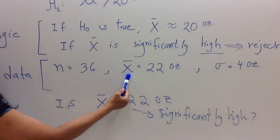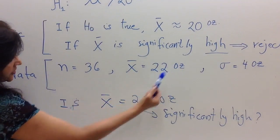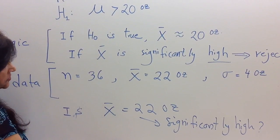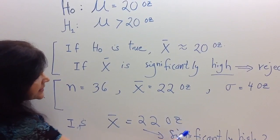So now the question is, our X̄ is 22 ounces. Expected value was 20. Is this significantly high?